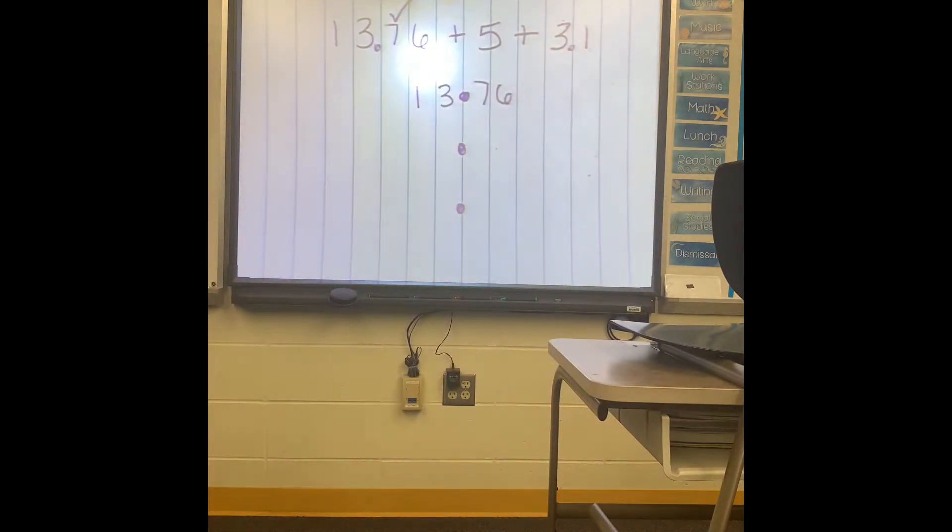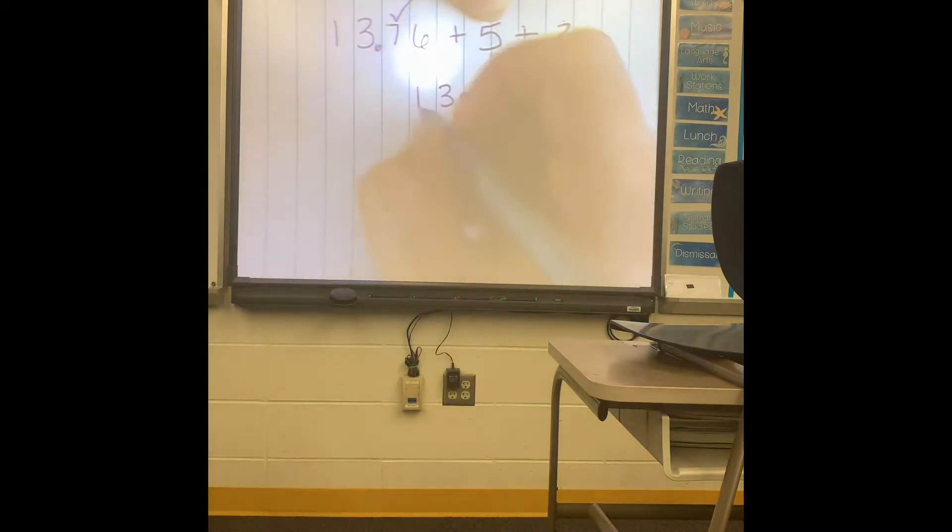This is a 5. Oh, I don't see a decimal. That means it's invisible at the end. So 5.00. And then this is 3.1.